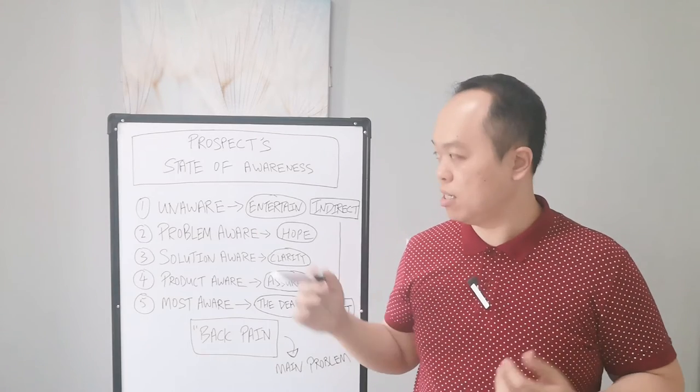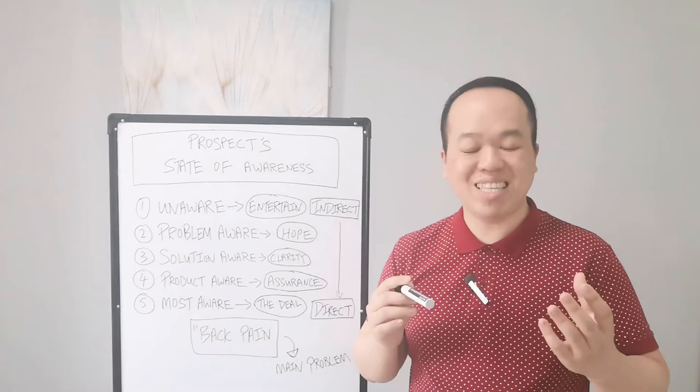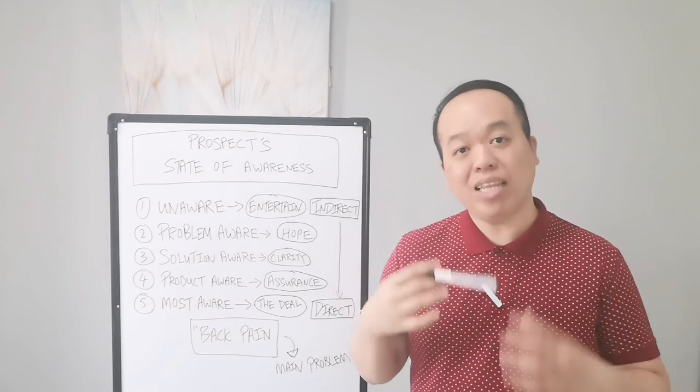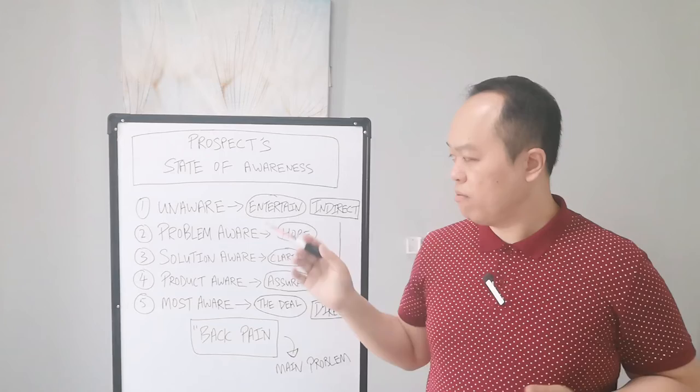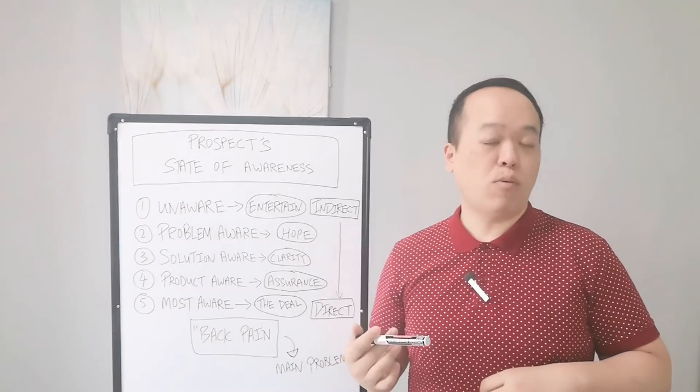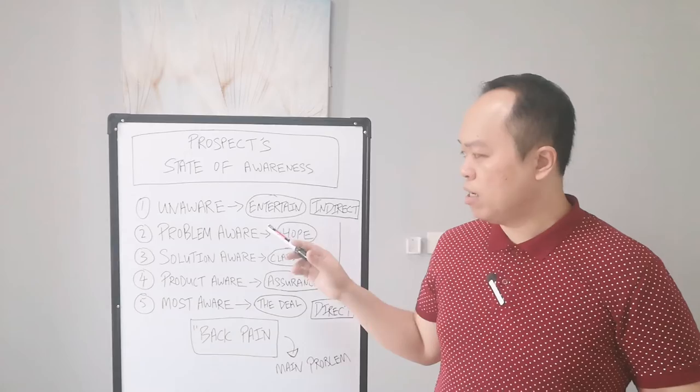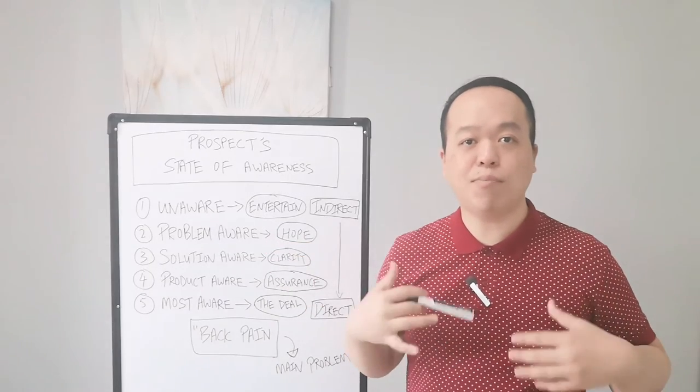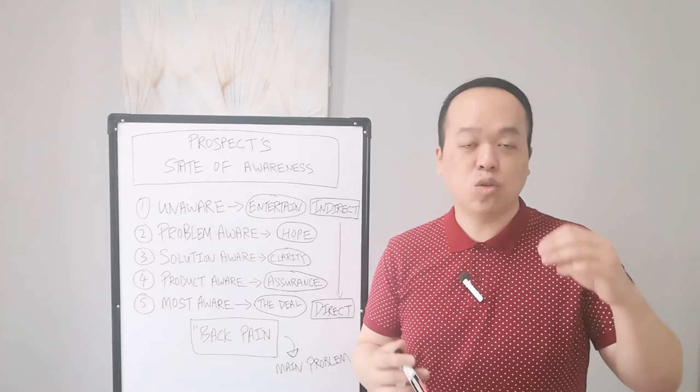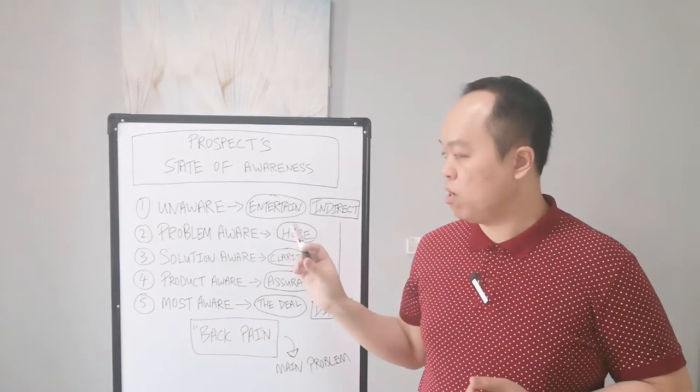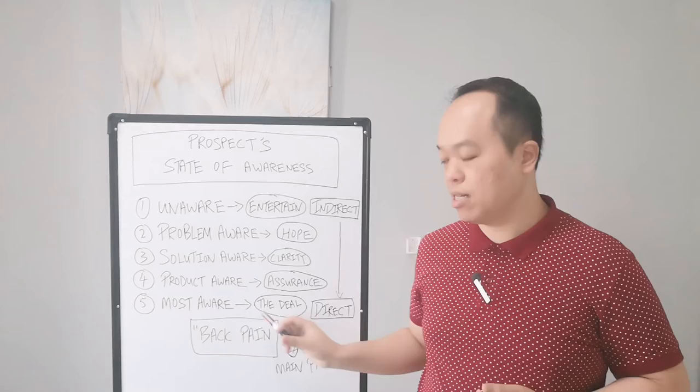Moving on to stage two, which is problem aware. These are people who know they have a back pain problem, but they don't know what kind of solution is suitable for them to prevent or cure their back pain. Some solutions might be seeing a doctor, visiting a massage therapist or chiropractor. In this stage, your messaging is to give them hope in the form of educating them - what you need to do to prevent back pain or reduce your back pain problem. Use lead magnets to tell them they may potentially be having this back pain problem and here are tips to prevent it.